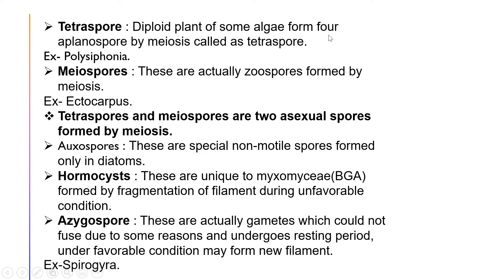The next type is tetraspores: the diploid plant of some algae forms four aplanospores by meiosis, called tetraspores. Example: Polysiphonia. Meiospores are zoospores formed by meiosis — example: Ectocarpus. These examples are important. Tetraspores and meiospores are the two asexual spores formed by meiosis — this is an important statement.